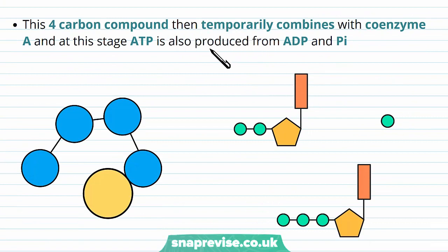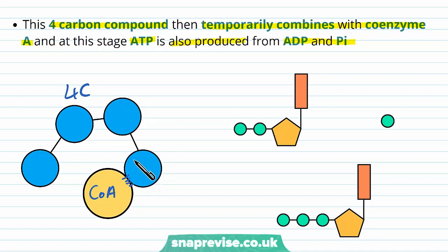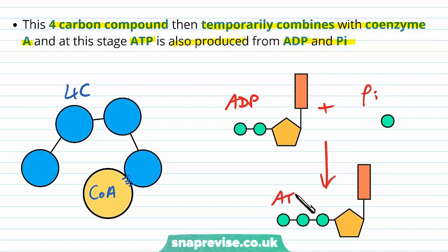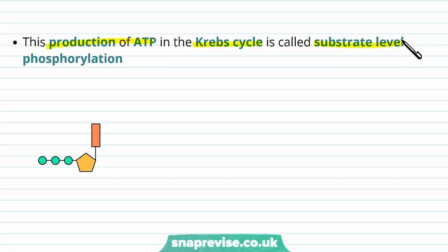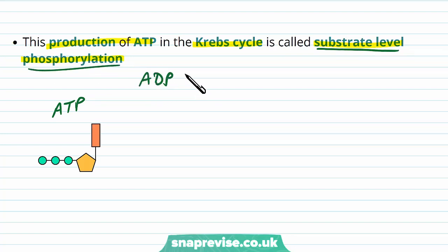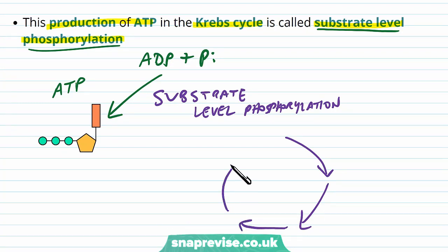The four-carbon compound then temporarily combines with coenzyme A, and at this stage an ATP is produced from the ADP and phosphate floating around. Because of certain chemical rearrangements, a molecule of ADP combines with a phosphate group to form an ATP. This kind of production of ATP in the Krebs cycle is known as substrate level phosphorylation — when ATP is made by adding a phosphate to ADP, we term this substrate level phosphorylation. So if you're ever asked how ATP is made during the Krebs cycle, it's by substrate level phosphorylation.